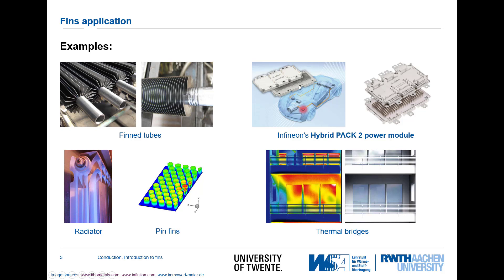A very typical example nowadays are fins in electric cars and electrical machines. Due to the very high power density that those electrical machines have today, the heat that needs to be removed from the electrical components is very high, and this heat removal is a limiting factor in further increasing the power efficiency and reducing the size of those components. You can see here those pin fin structures.